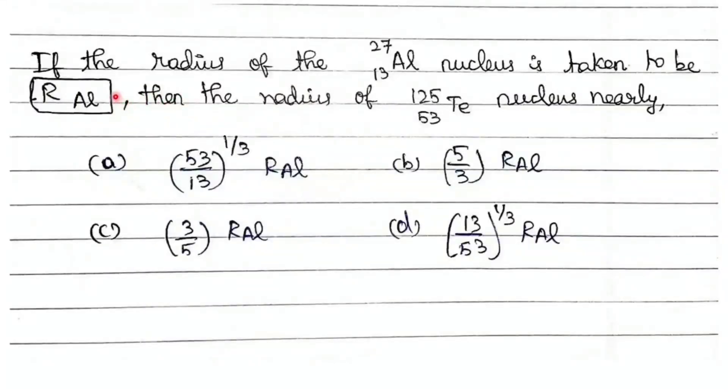We came to the next question of today's session. If the radius of the aluminum nucleus is taken to be RAL, then the radius of the tellurium nucleus nearly. Very basic, simple. They have been asking this type of questions consistently in your NEET exam. What we have to do? We should find.